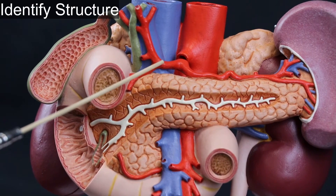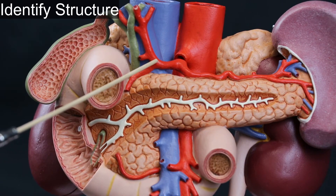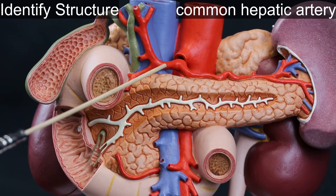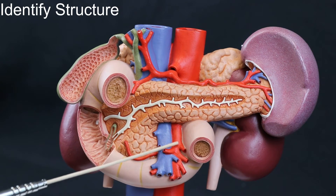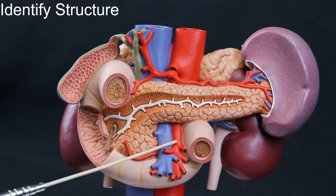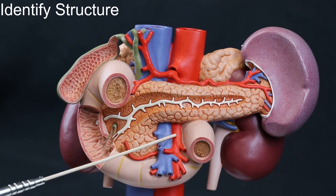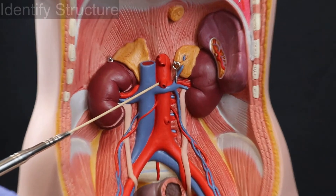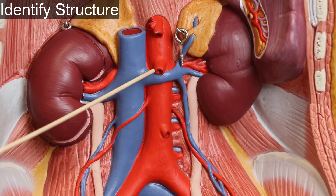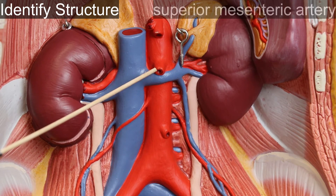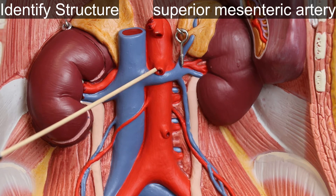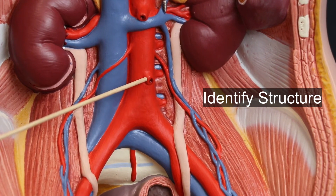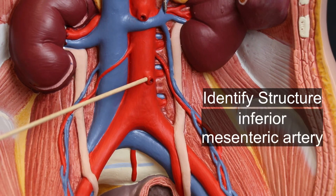ID structure: common hepatic artery. ID structure: superior mesenteric artery. ID structure: inferior mesenteric artery.